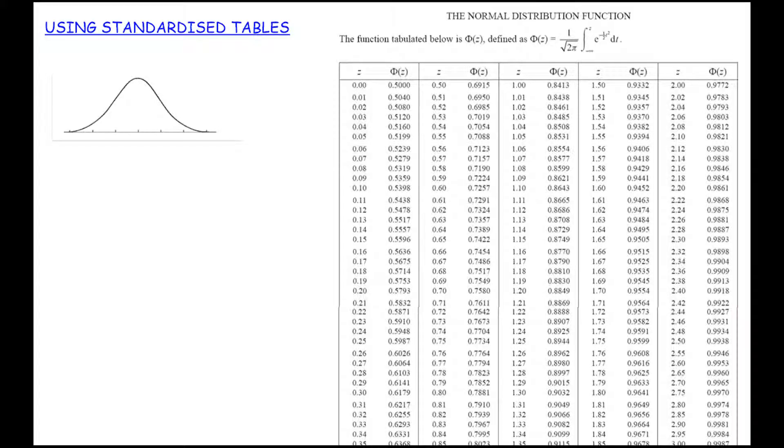Next we're going to look at using the standardized tables in order to calculate normal distribution probabilities. Just like the binomial tables that we saw previously, there are pre-calculated published tables for us to look up probabilities associated with the number of standard deviations away from the mean.